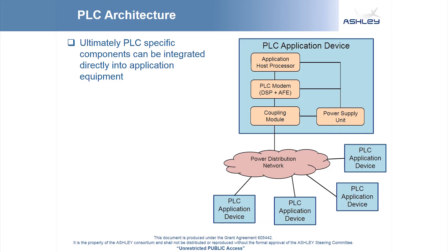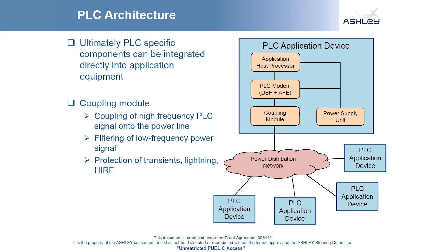Similar to the traditional avionics architecture, the necessary components enabling PLC may be integrated directly into the application devices, providing maximum weight savings. There are two main components as part of the PLC solution. The coupling module consists of passive analog components and its job is to couple the high frequency PLC signal onto the power line. It also filters and protects the modem from the low frequency power signal. It may be considered as the one component that is dependent upon the characteristics of the power distribution network. However, generic couplers may be designed which support a variety of different power networks.